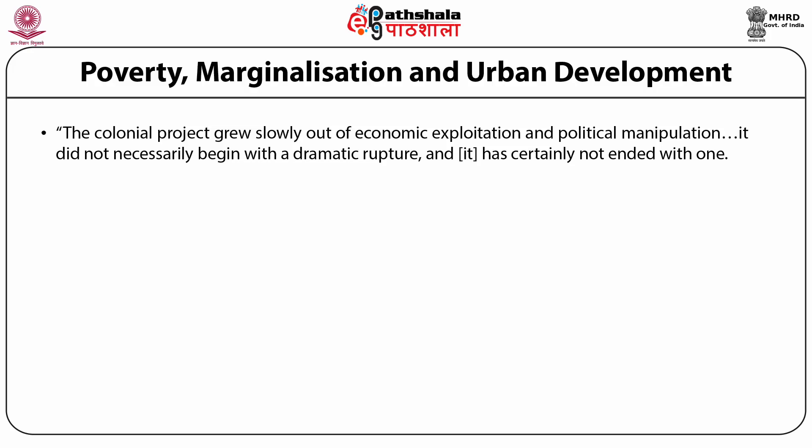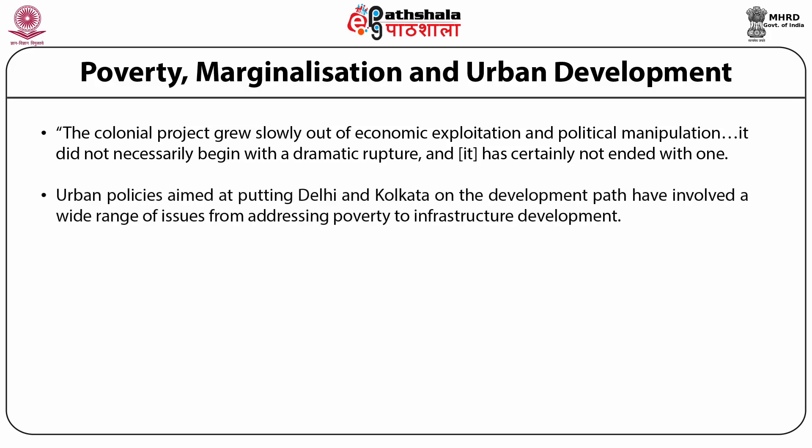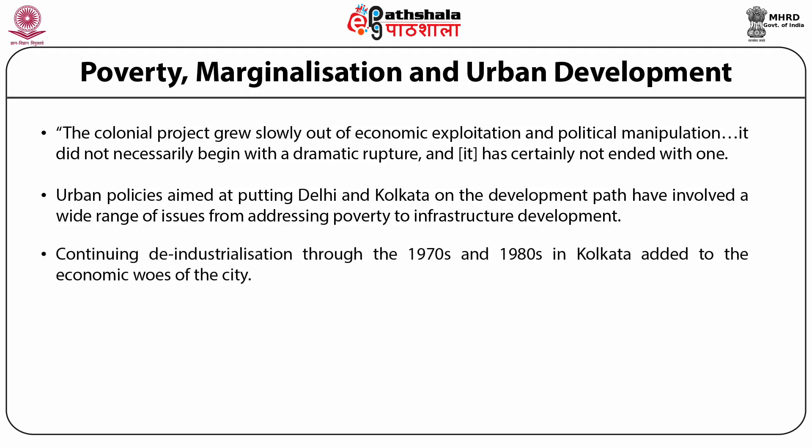One of the most explicit attempts to sever these links with the past is that of development. Urban policies aimed at putting Delhi and Kolkata on the development path have involved a wide range of issues, from addressing poverty to infrastructure development. In the immediate post-independence period, the cities grappled with de-industrialization, particularly in Kolkata, where commercial decolonization began in the 1960s along with the declining importance of Kolkata port, which affected traditional industries such as jute and paper mills. Continuing de-industrialization through the 1970s and 1980s added to the economic woes of the city. Poverty became synonymous with Kolkata, and much of the urban development plans were aimed at improving the conditions of the city.